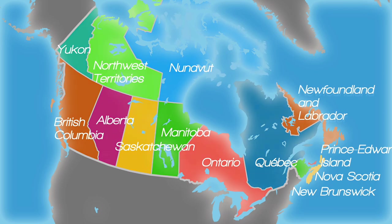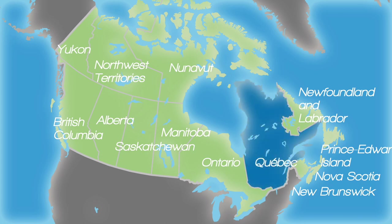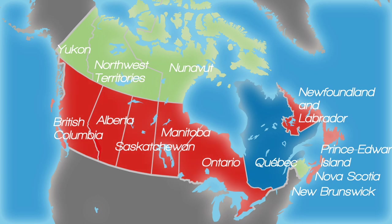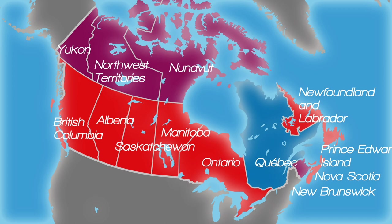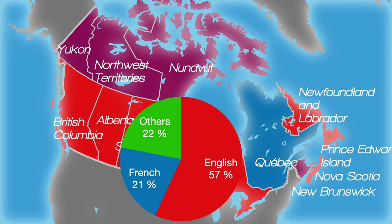Although English and French are both official languages, they are actually distributed quite unevenly across the country. French is the sole official language in Quebec, while English is the sole official language in most other provinces. New Brunswick is officially bilingual. Likewise, both languages are recognized in the territories. About 57% of the population speaks English as a native language, and about 21% speaks French. As a country of immigration, over 20% speak another native language. In the sparsely populated territories, Aboriginal or First Nations languages are also officially recognized, such as Inuktitut in Nunavut.